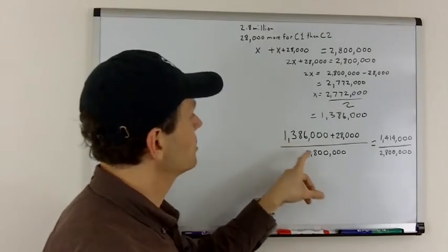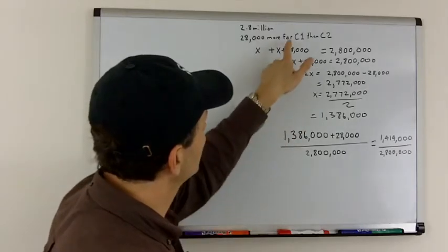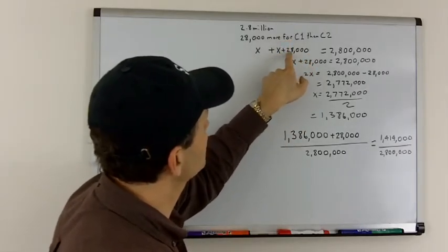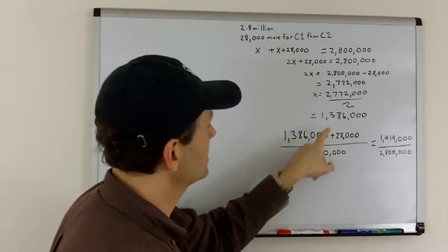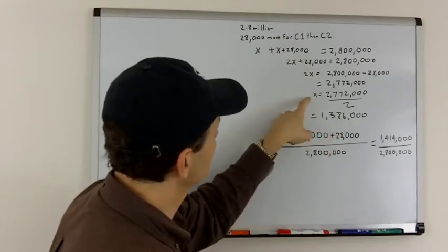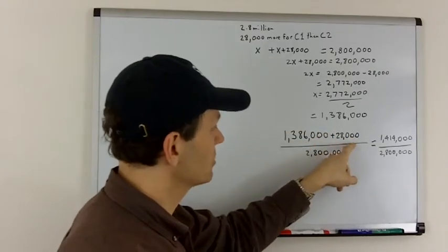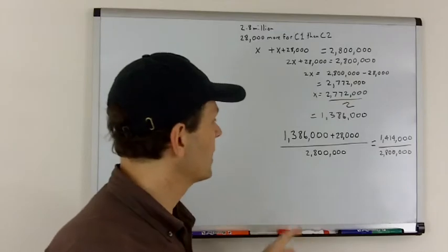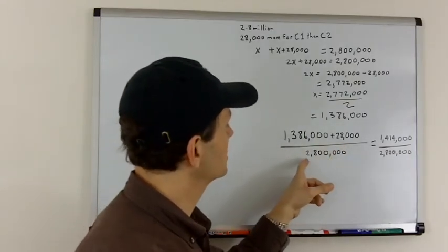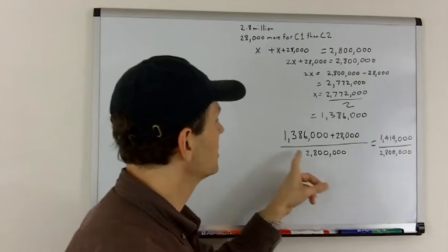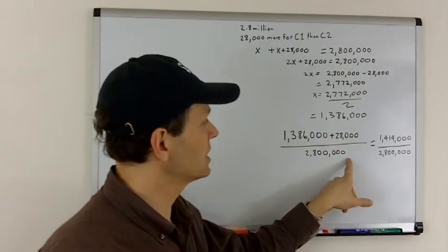So, now in order to determine the percentage, what we have to do is we want Candidate 1. So, Candidate 1 was X plus 28,000. So, we're going to take the 1,386,000, which is the value of X, plus the 28,000 extra that Candidate 1 got. And then we're going to determine what fraction of that is the total number of votes. So, that's this number over the total number of votes, which is 2,800,000,